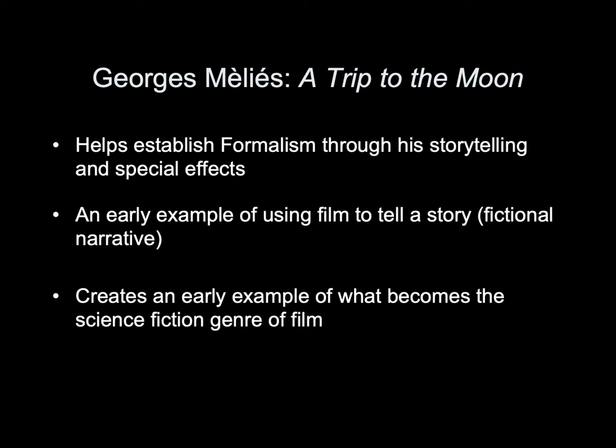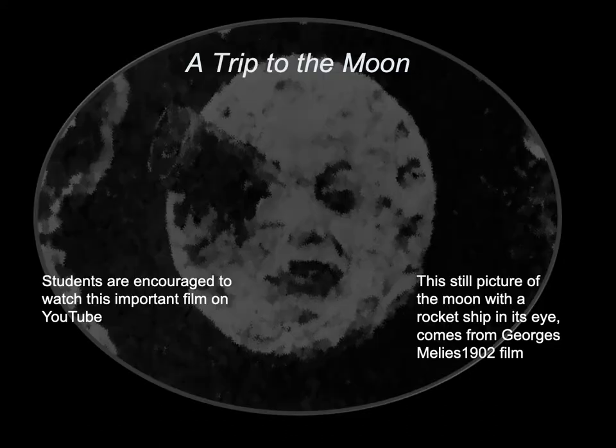George Melies' film A Trip to the Moon helps establish formalism through his storytelling and special effects. It is an early example of using film to tell a story — also known as a fictional narrative — and creates an early example of what becomes the science fiction genre. Students are encouraged to watch this important 1902 film on YouTube.